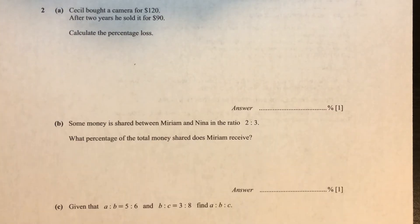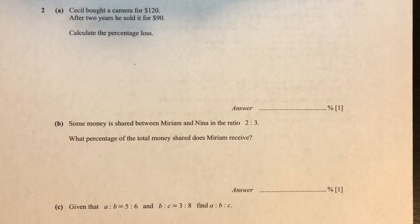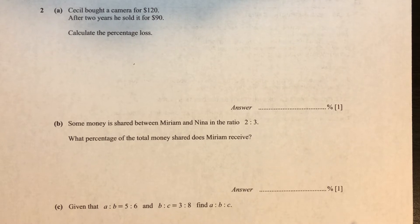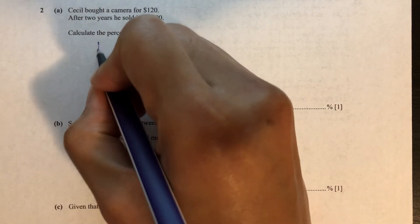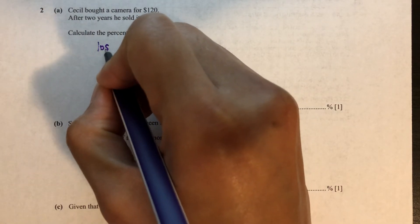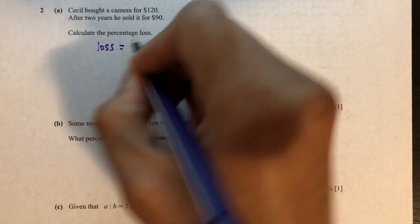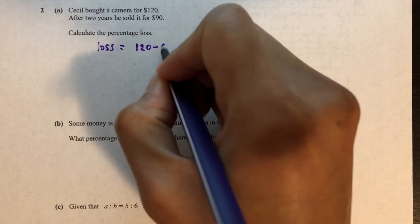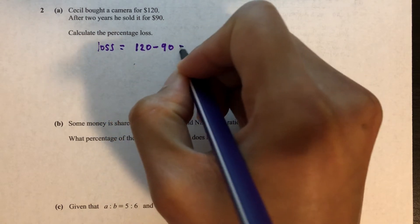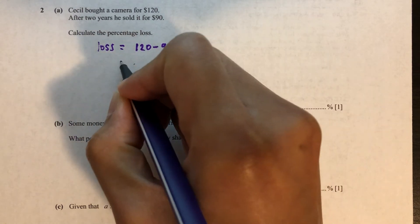Question number two. Cecil bought a camera for $120, and after two years he sold it for $90. Calculate the percentage loss. So first we calculate the loss: 120 minus 90, which is 30.